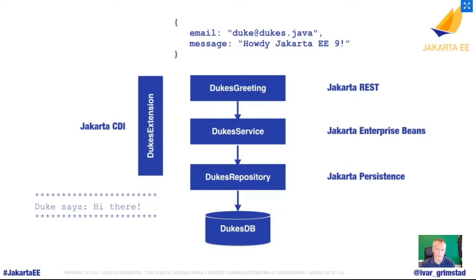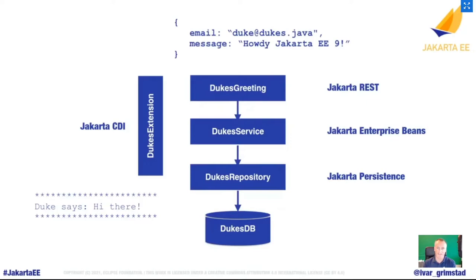I'm using Jakarta Enterprise Beans (EJBs) to call the repository with transaction support, and a REST endpoint implemented with Jakarta REST producing a JSON message saying 'Howdy to Jakarta EE'. I've also added a CDI extension — not every app has one, but if you do it's good to know what to think about when migrating. This CDI extension prints a nice message to the administrator on startup.